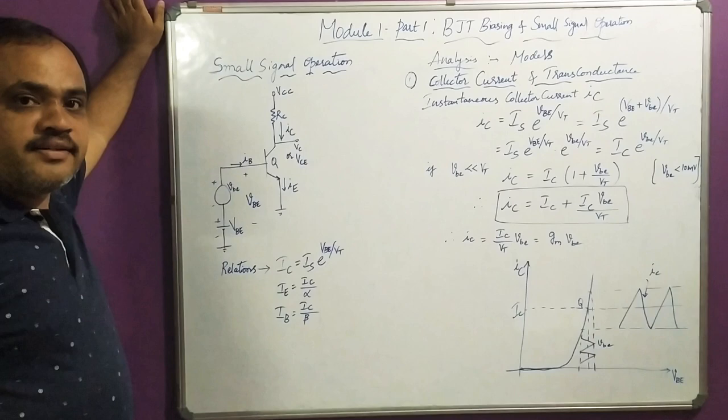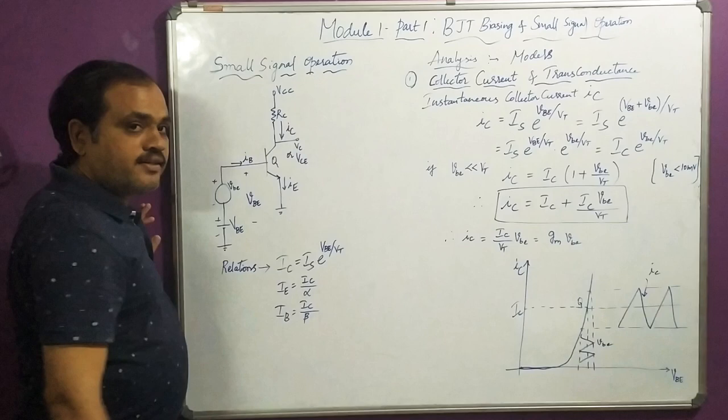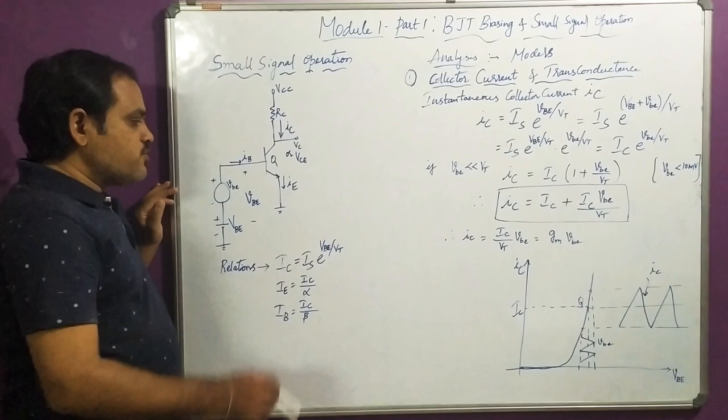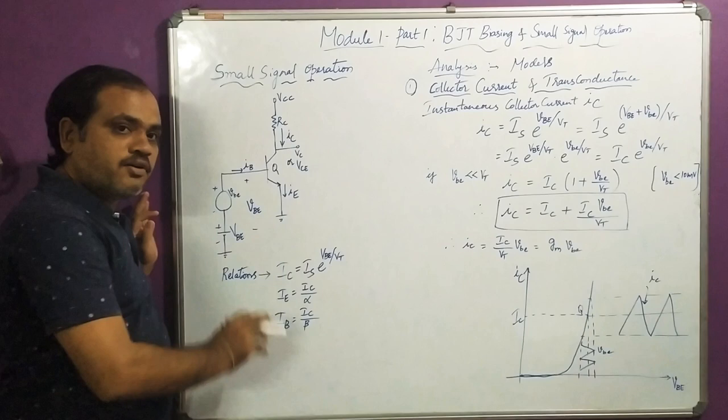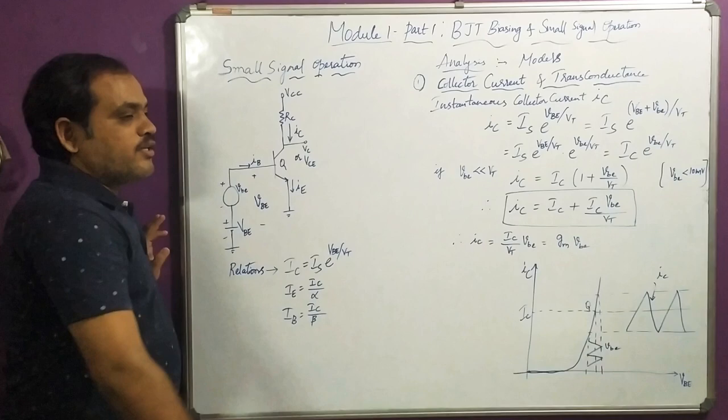For this we are going to consider common emitter configuration. In the common emitter configuration, for the transistor to work as an amplifier, it should operate in active mode. To operate in active mode, we should consider the base-emitter junction to be forward biased and the base-collector junction to be reverse biased. Then only we can say that small signal operation is going to be performed.